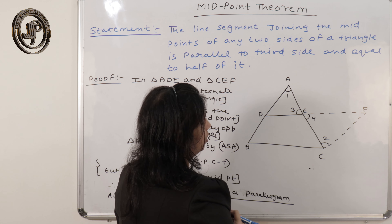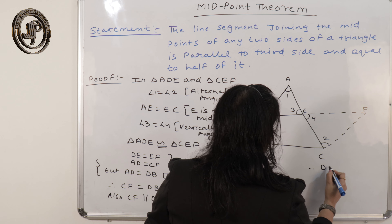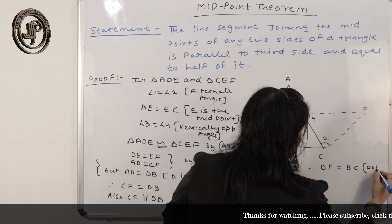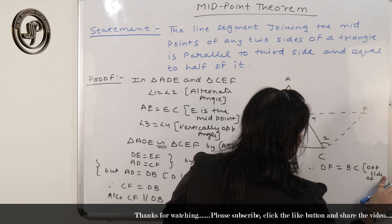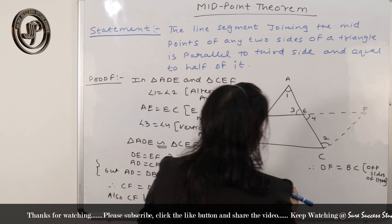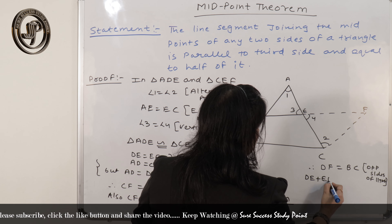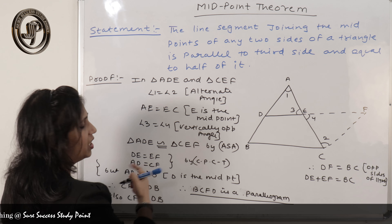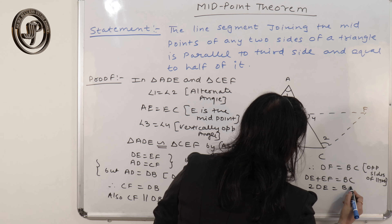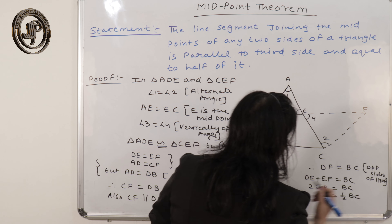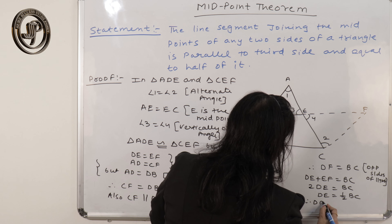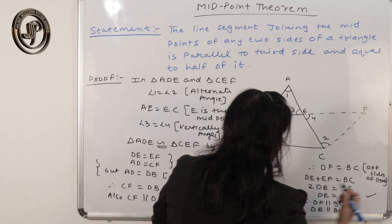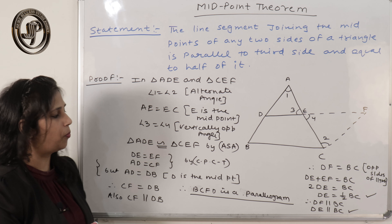Therefore, DF equals BC — reason: opposite sides of parallelogram. And DF can be written as DE + EF equals BC. Since DE equals EF (proved by CPCT), we can write 2·DE equals BC, therefore DE equals half of BC. Since BCFD is a parallelogram, DF is parallel to BC, so DE is also parallel to BC. Thus the midpoint theorem is proved.